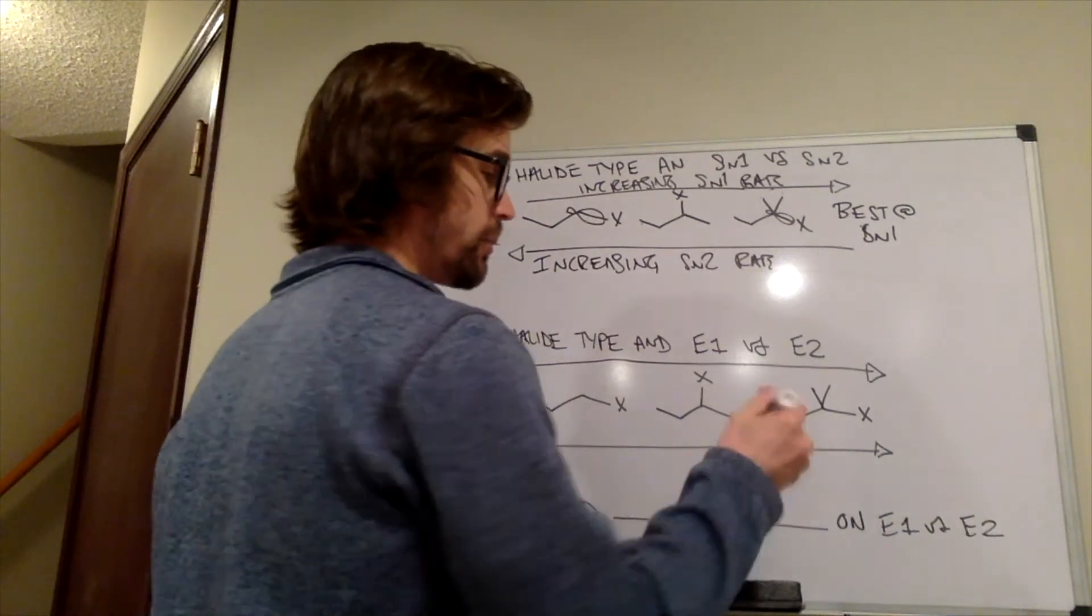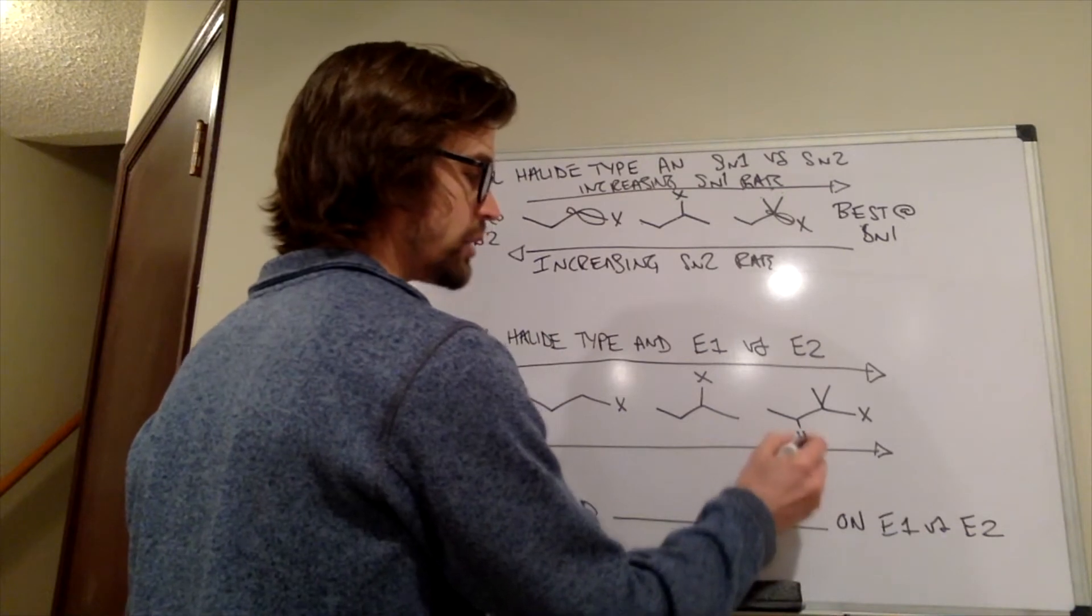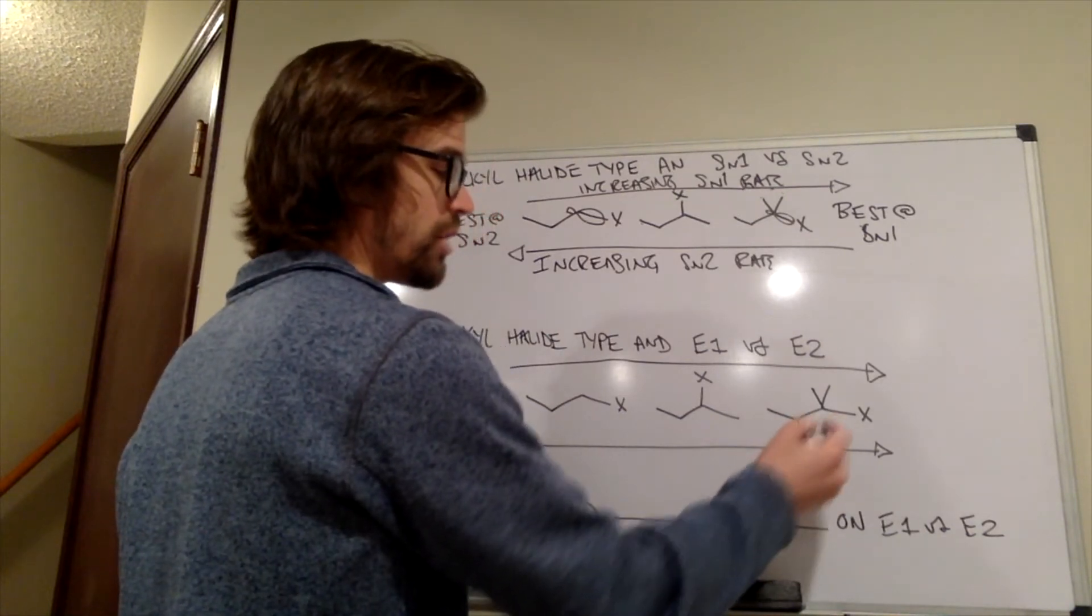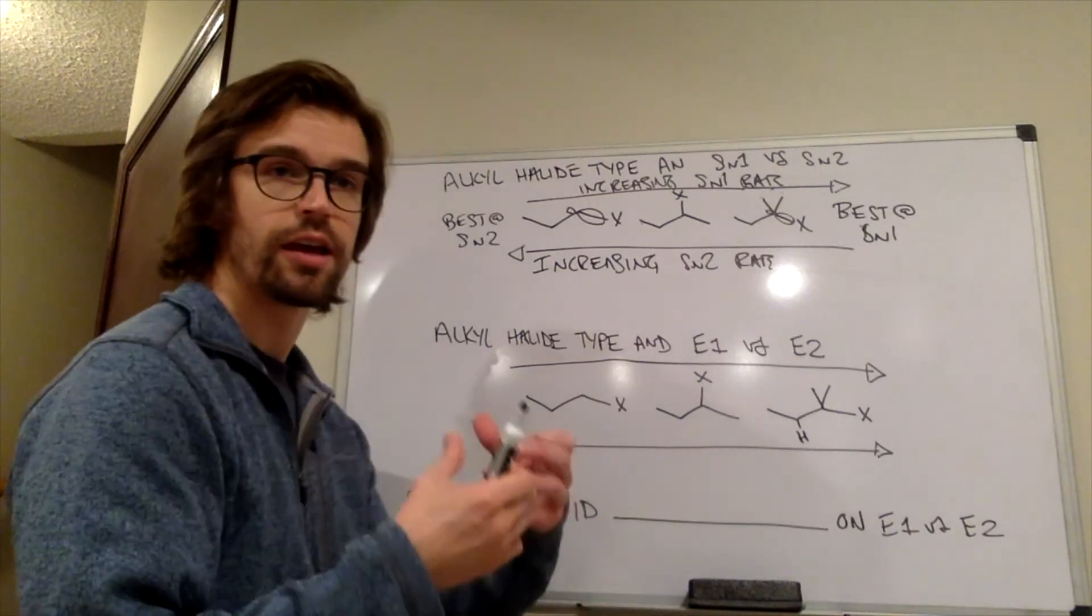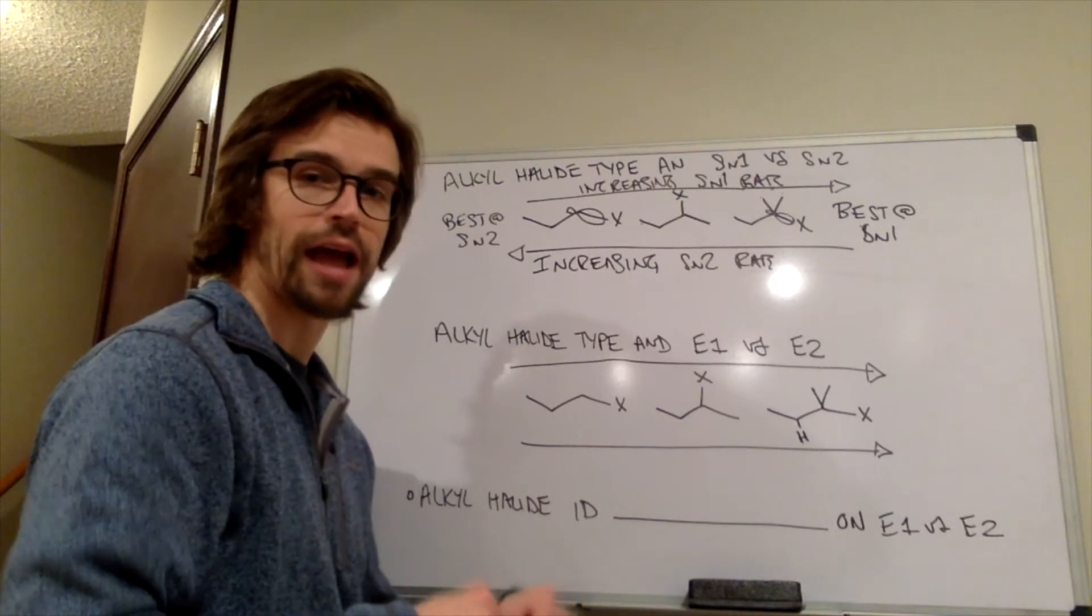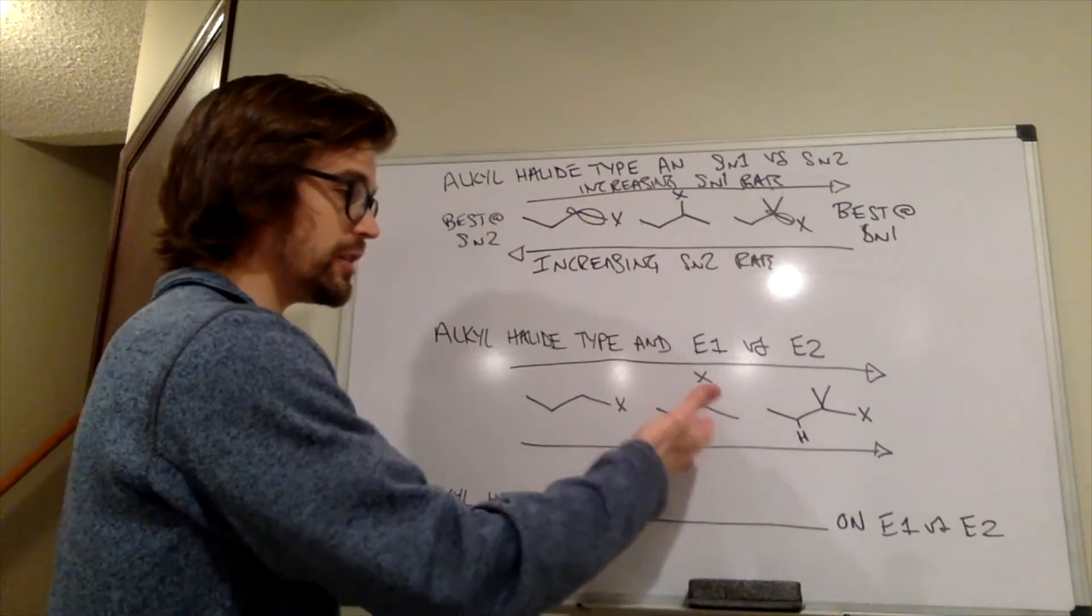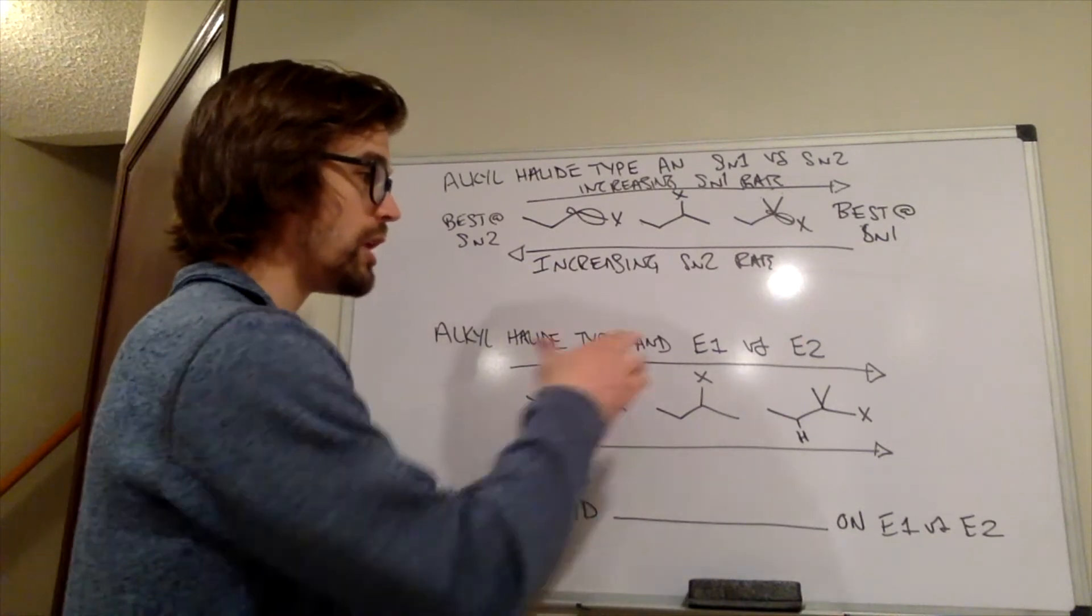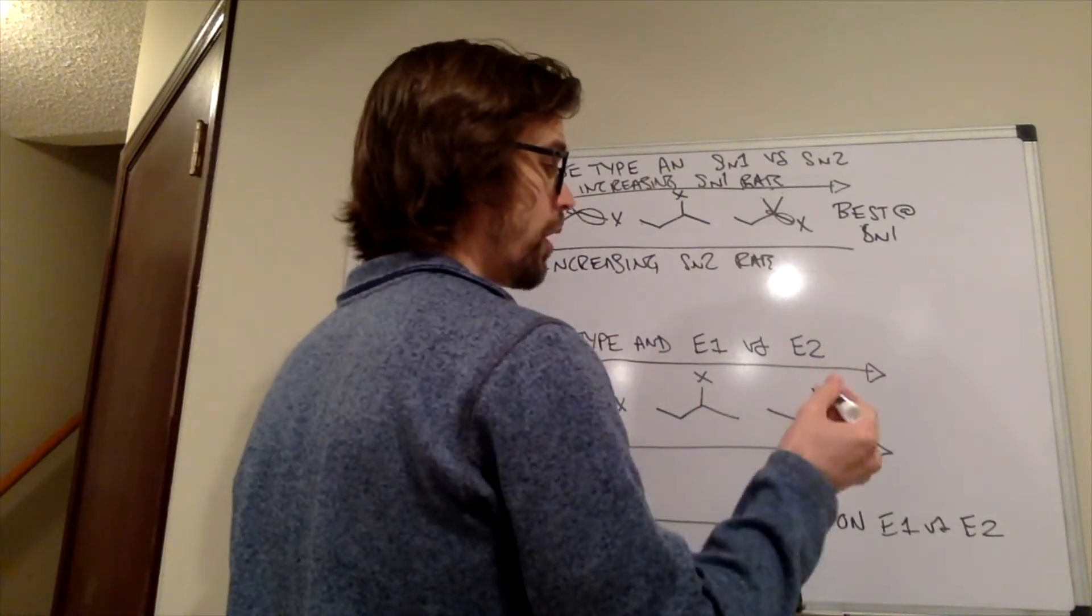If we deprotonated this hydrogen here in an E2 reaction, we're going to have a tri-substituted alkene as the product, and the partial alkene character in that intermediate is going to make the activation energy be lowest compared to these other two. So both E1 and E2 are best.